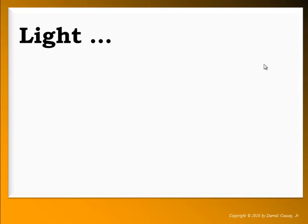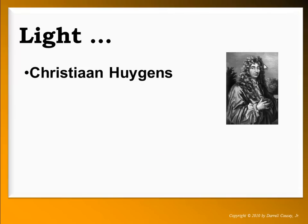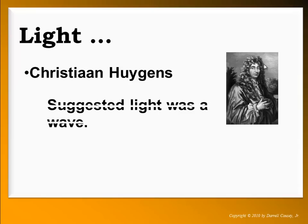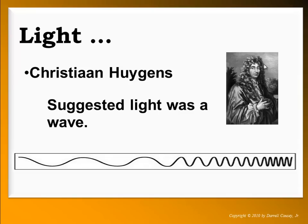Another man by the name of Christian Huygens thought different. He suggested light was a wave, and since it was much easier to show that light had wave properties, the people at the time, the members of the Royal Societies and educated people, thought Christian Huygens was probably right and that Newton was wrong in his beliefs. Today we know that they were both right.